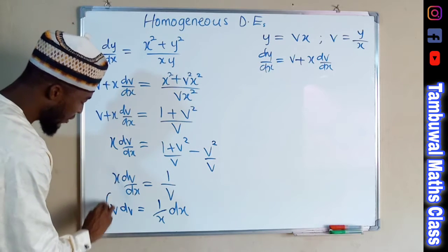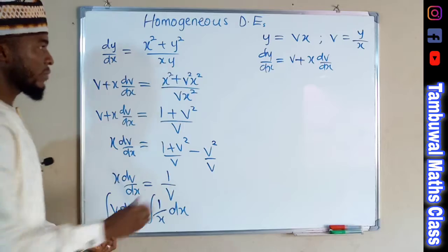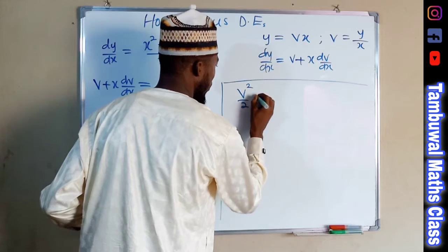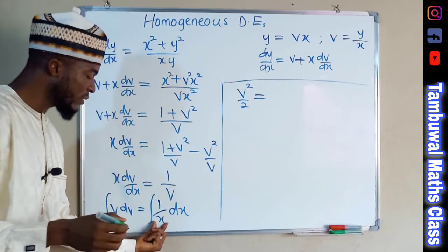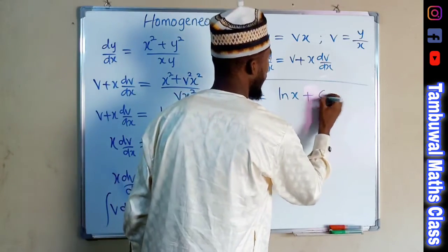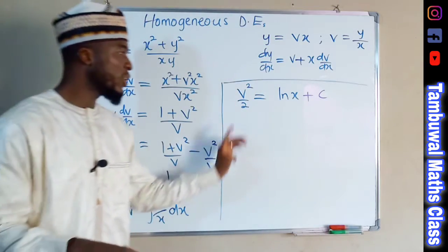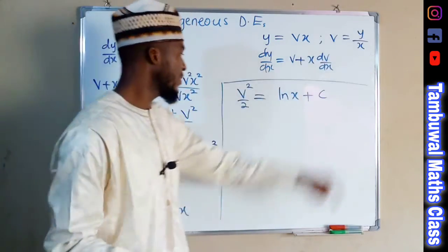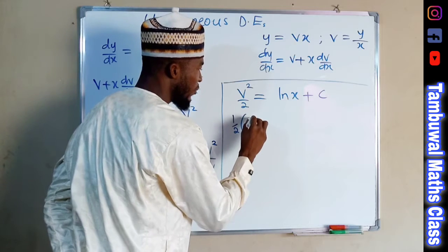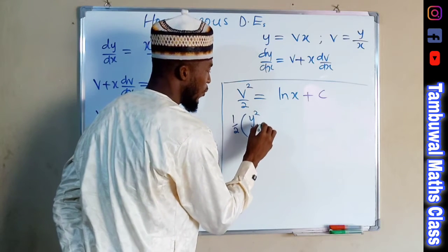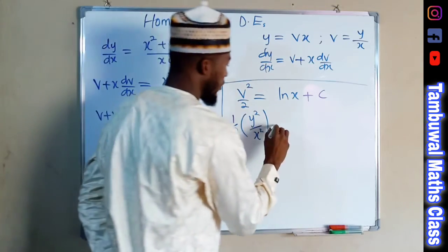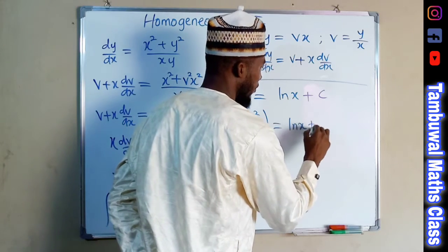Now we integrate both sides. Integrating v on the left gives v squared over 2. On the right-hand side, integrating 1 over x gives the natural log of x, plus the constant of integration C.